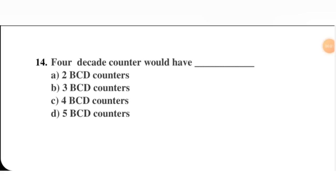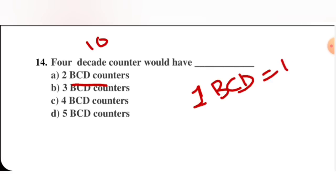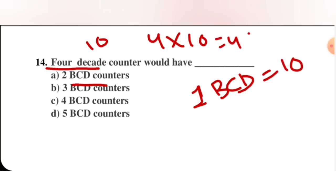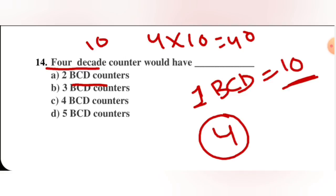Next question: a 4-decade counter would have how many BCD counters? Decade means 10. One BCD counter counts 10 states, and we need 4 decades, which is 4 into 10 equals 40. Since one BCD counter handles 10, divide 40 by 10 to get 4. So 4 BCD counters are required.